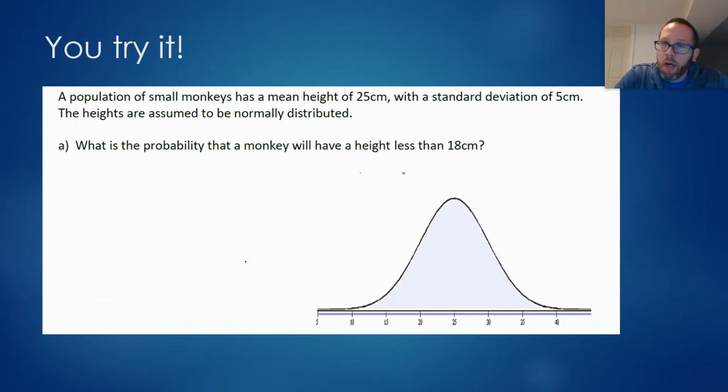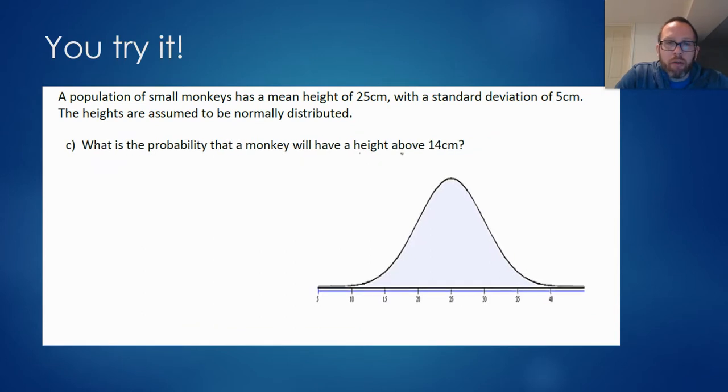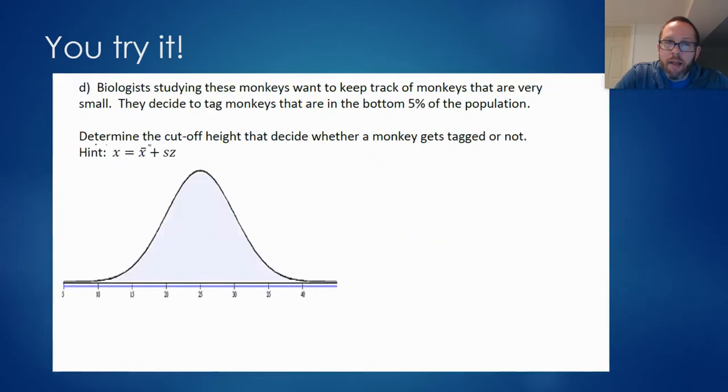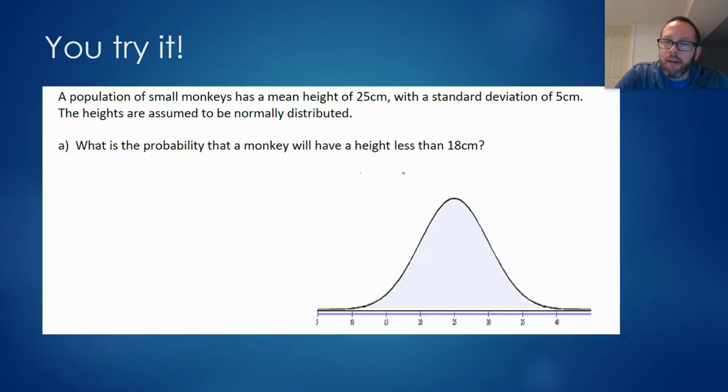So for solving a between question, a range of values, you just look up the two Z scores, look at the probabilities and subtract them. So those are the three types of questions you guys should be able to do. A less than, a greater than, where you take away from one, and in between, where you subtract the two probabilities. Why don't you try it? So I've given you guys a new scenario here. So we've got a population of small monkeys. Their height is only 25 centimeters. So they are very small with a standard deviation of five centimeters. And we're going to assume the heights are normally distributed. So I've given you for each part of these, I've given you a little visual of that. So in A, you're doing a less than question. In B, you're doing a between question. In C, a more than question. And then I'll help you out with D. But you guys can try A, B, and C.